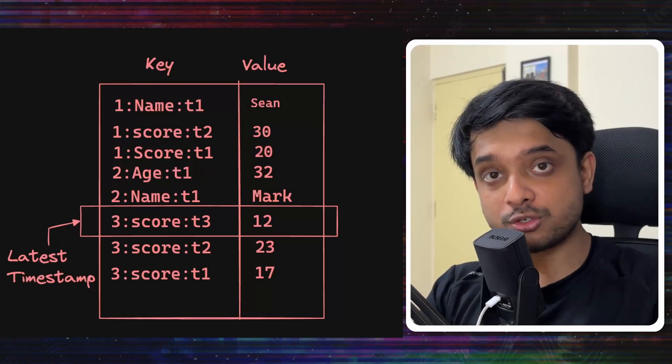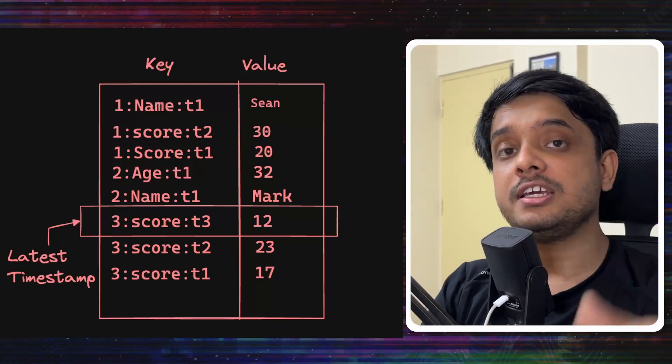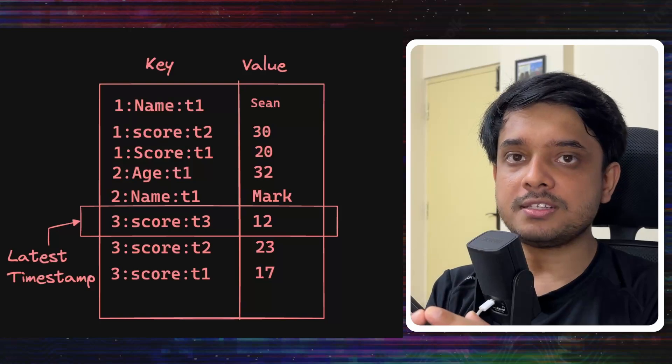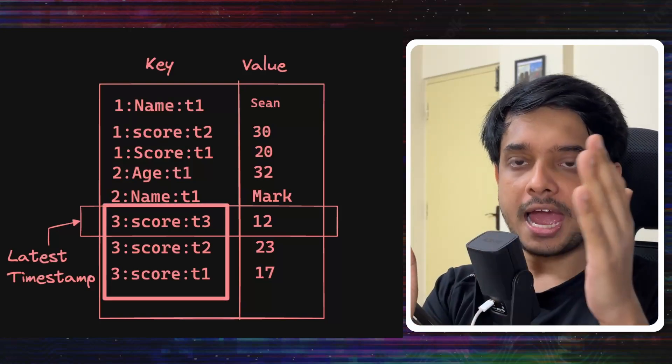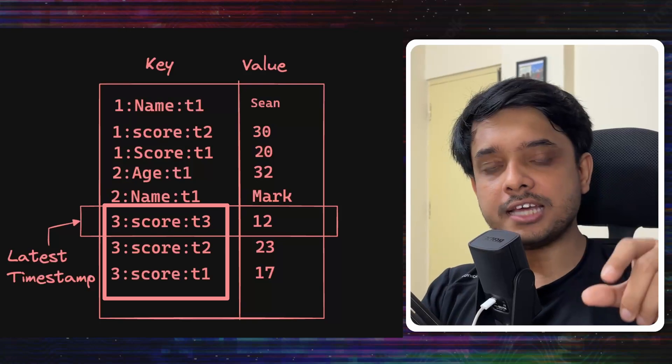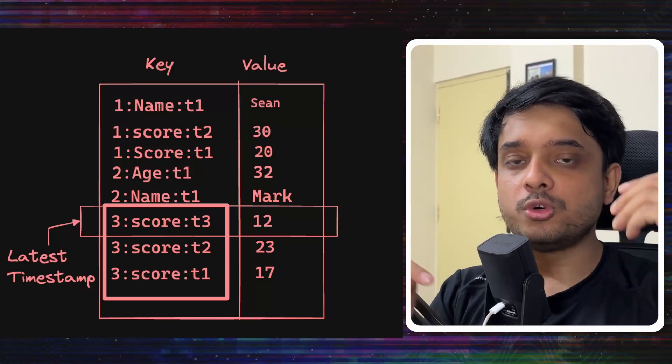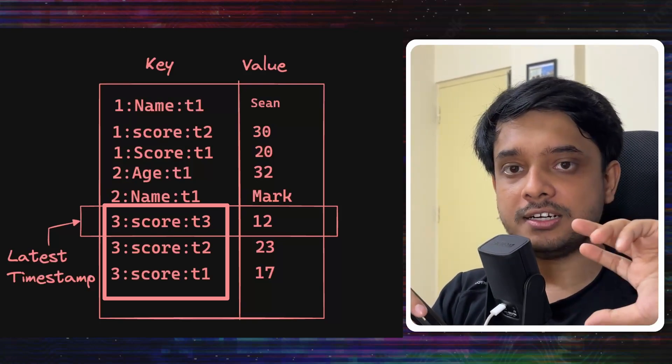But when it comes to the timestamp, it would sort it in descending order. So in this example, you can see 3:score which is for row ID 3 and column score. After that, the timestamps would be sorted in the descending order.